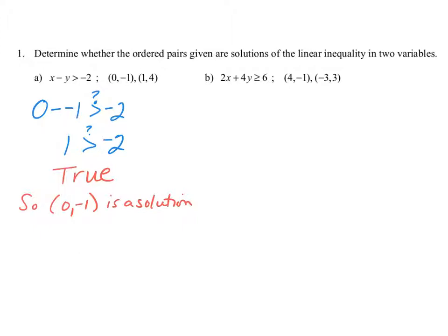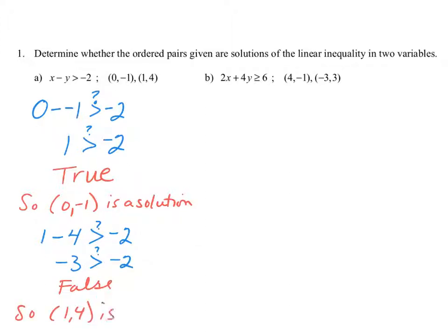Now let's try (1, 4). Replacing x with 1 and y with 4 in the original inequality, we check to see if 1 minus 4 is greater than negative 2. Simplifying the left side, 1 minus 4 gives us negative 3. Negative 3 is not greater than negative 2 because it appears to the left on the number line, so this is false — (1, 4) is not a solution. With linear inequalities, there are infinitely many solutions, and we must check each one to see if it is true.